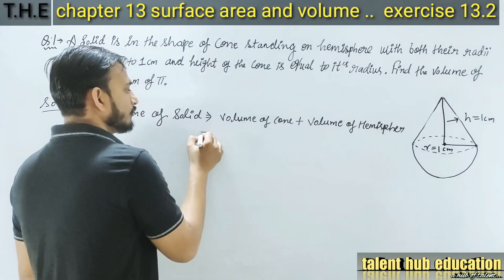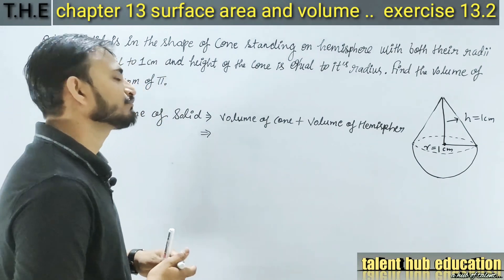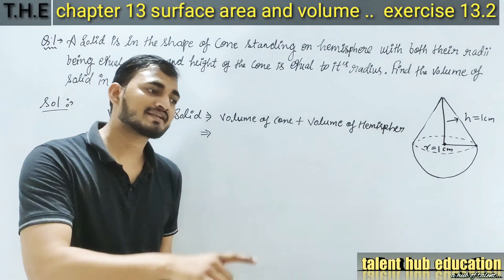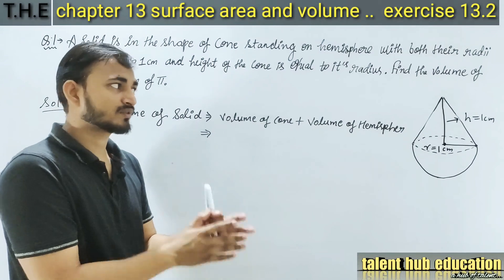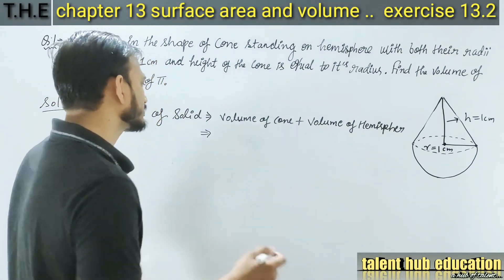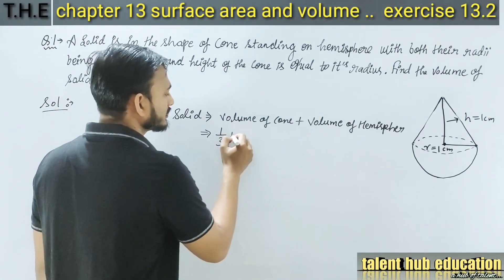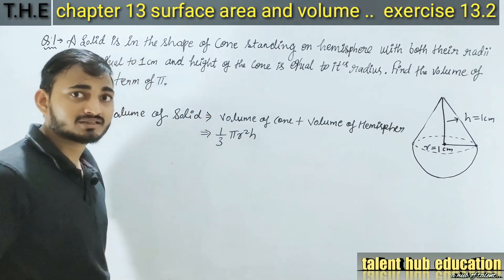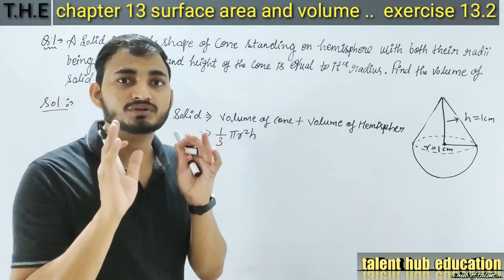Volume of cone कितना होता है? मैंने एक वीडियो में practically समझाया था कि volume of cylinder pi r square h होता है, और उसमें यदि same radius और same height के cone से तीन बार water fill करता हूं तो वो तीन बार में fill up हो रहा था। तो volume of cone, one third of volume of cylinder होता है — (1/3) pi r square h। वो वीडियो i button में है, जरूर देखो।